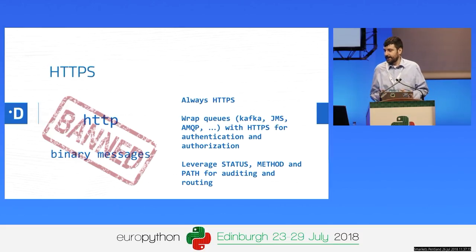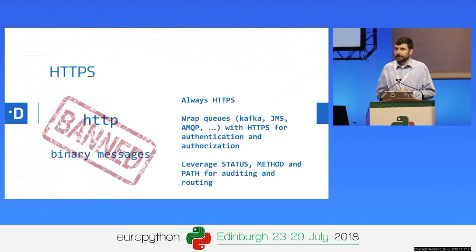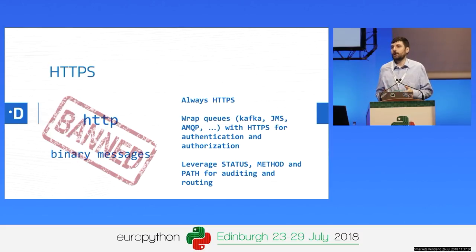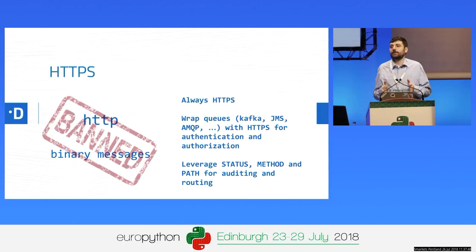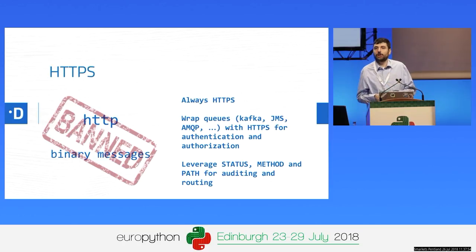We also want to leverage status codes, methods, and paths, because it is important not only to provide fast services, but we need auditing and routing. In government, you need to handle personal data, so it's better to trade some speed for the ability to have a unique and trustworthy system of encryption and authentication and authorization based on well-known protocols.